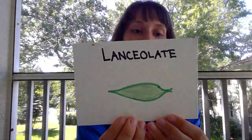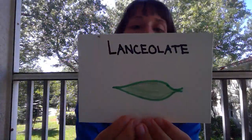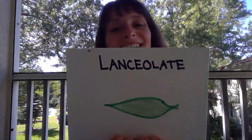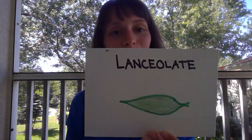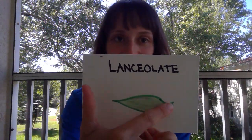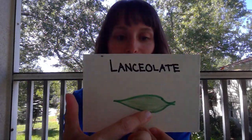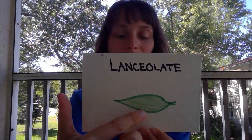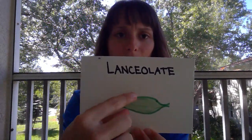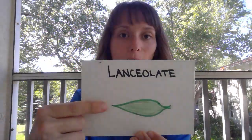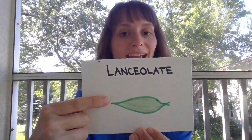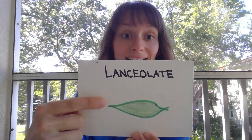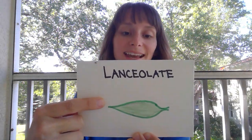Our second is what's called a lanceolate. It gets its name from the lances that they would use to joust in medieval times. You can see it starts out kind of thin, gets a little wider but still narrow all the way through, and it does have a point at the end of the leaf — just the way a lance would have a point at the end of it.